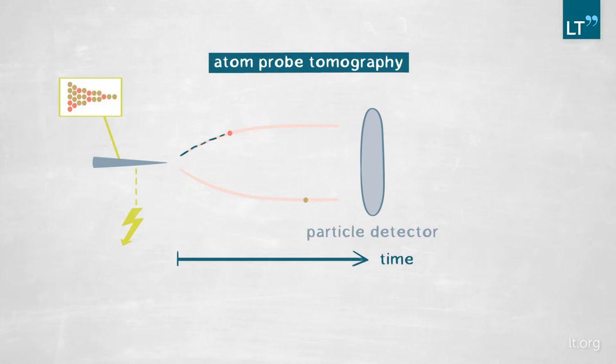However, a very light atom like hydrogen, for example, will travel very quickly. So based on the time of flight, we can actually determine which is the element that was sitting at that specific position on the specimen.